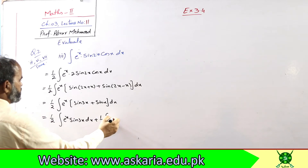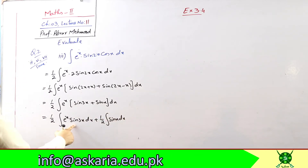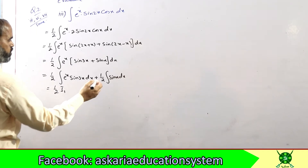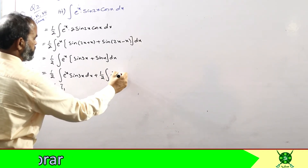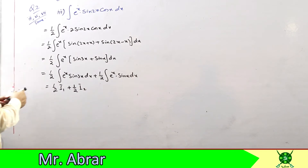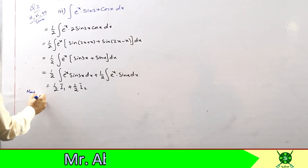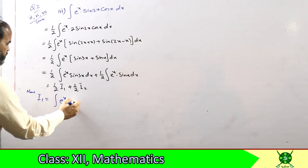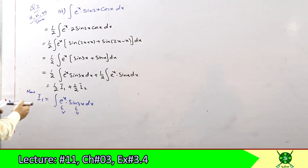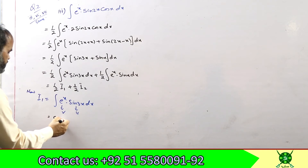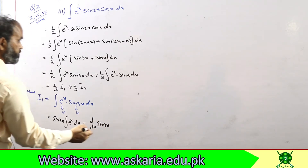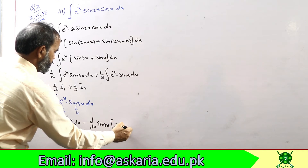Isko alag alag kar dein: one by two integral e^x sin(3x) dx, plus one by two integral e^x sin(x) dx. Ab dono mein exponential aur trigonometric hain. Pehle ko I1 aur doosre ko I2 karein. Pehle hum I1 solve karenge — bilkul same technique se jaise abhi guide kiya tha: e^x sin(3x) dx, trigonometric ko u aur exponential ko v lete hain.